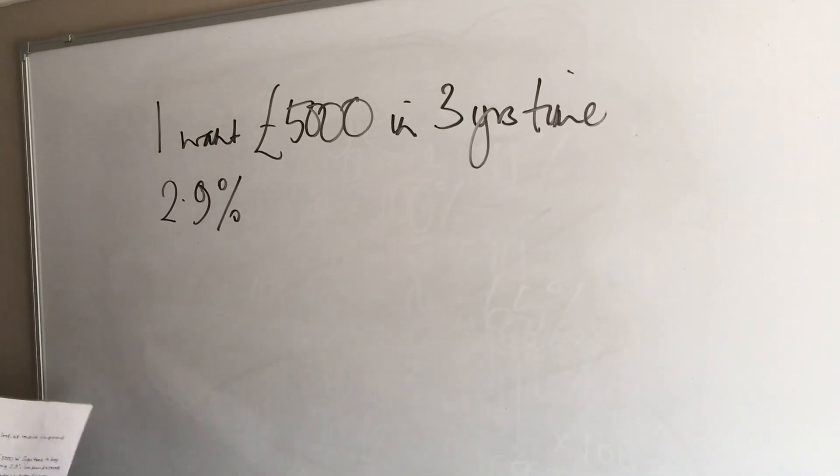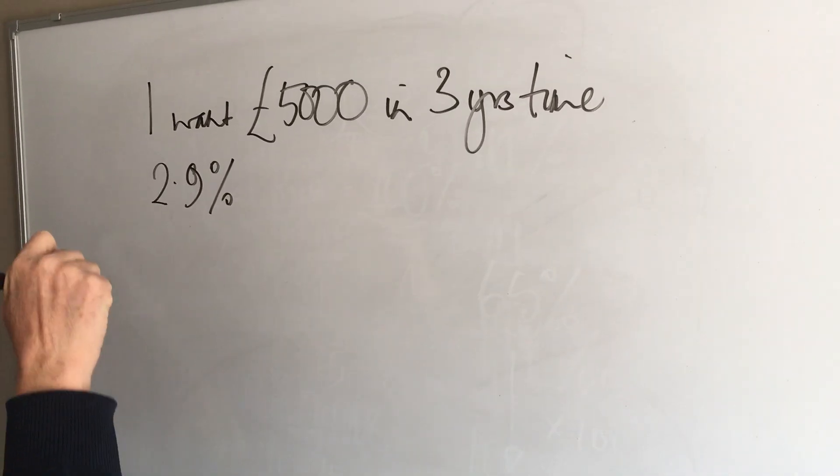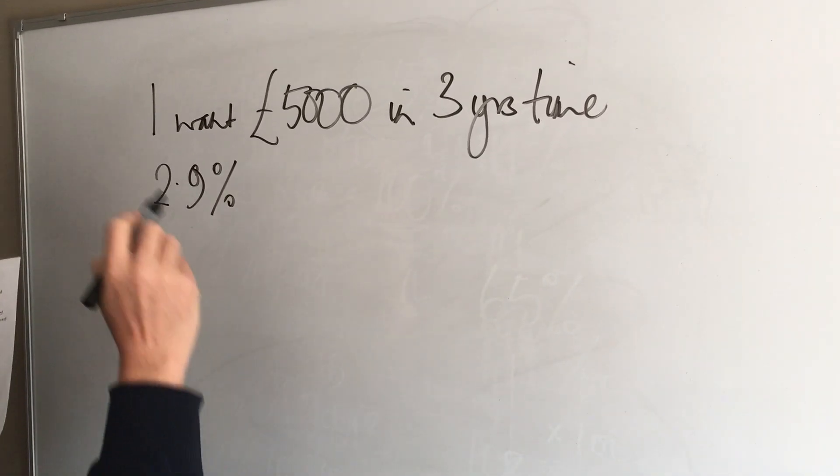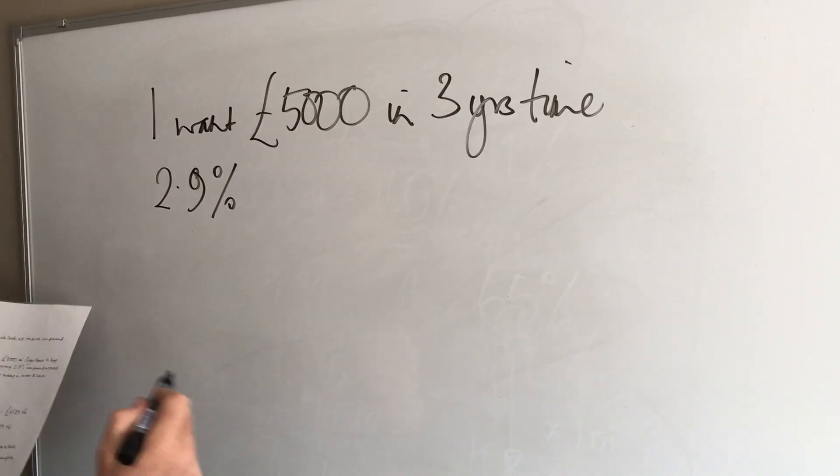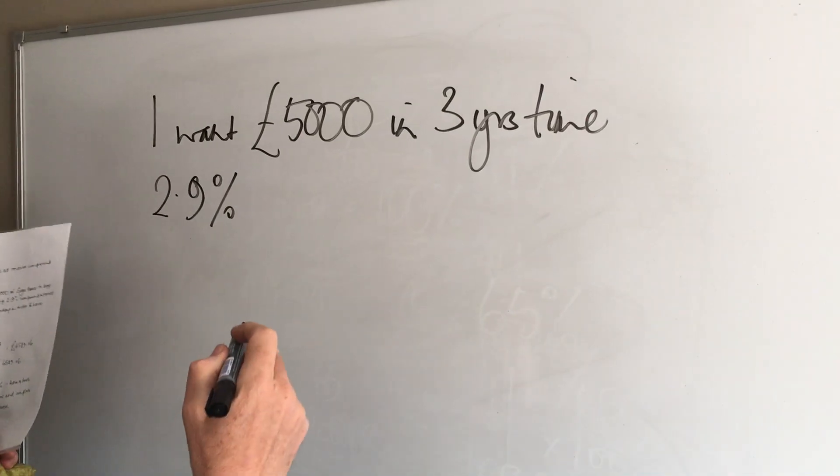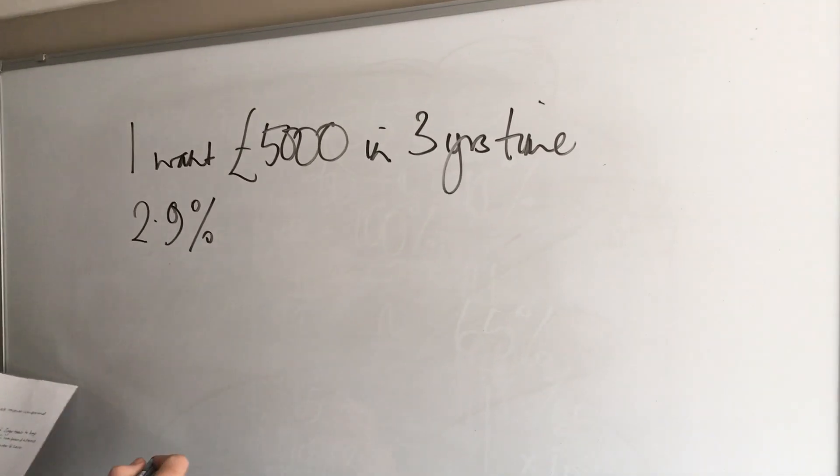The question this time is how much am I going to have to put in the bank today to have £5,000 in three years time? And quite simply there are two formulas that we could use to help us.